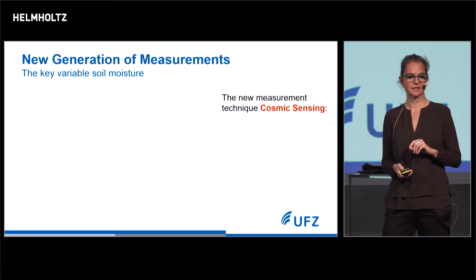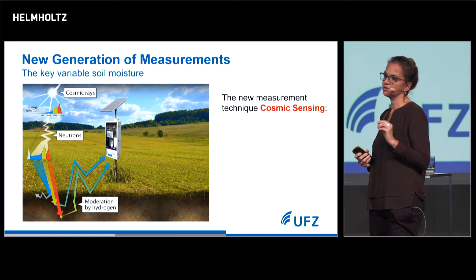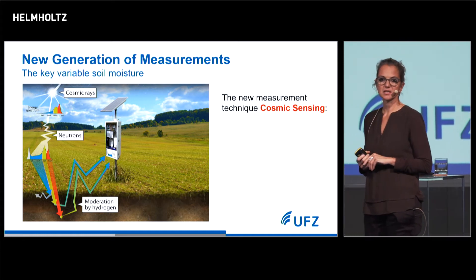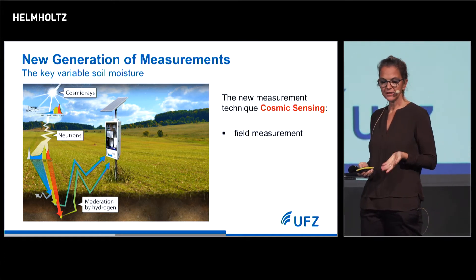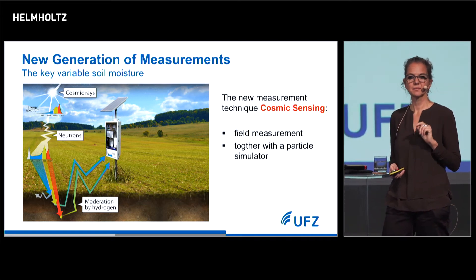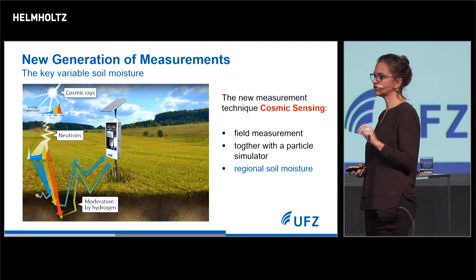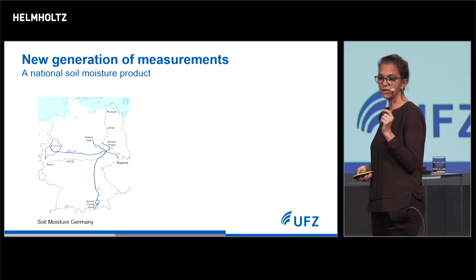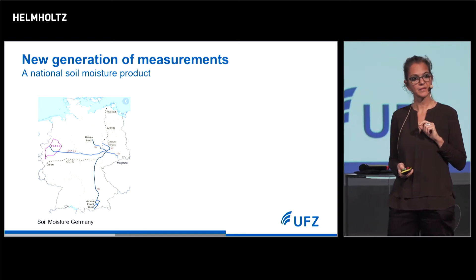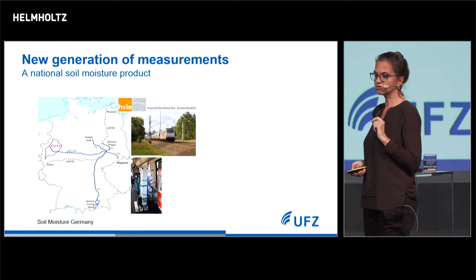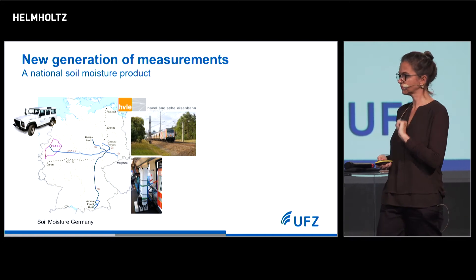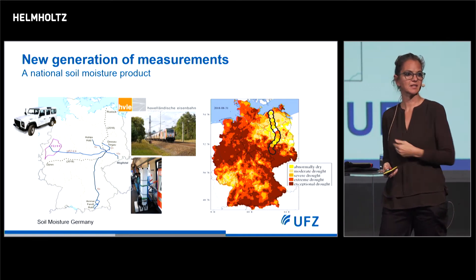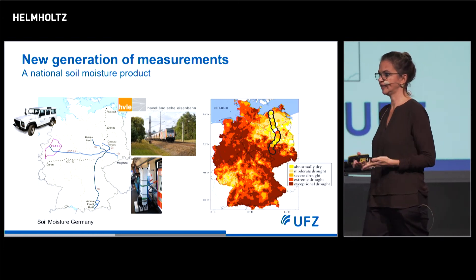But there is a method called cosmic sensing. It makes use of cosmic neutrons that interact with water in the soil, and these particles are detected by detectors. It's a field measurement that runs together with a simulator, and it gives you information on regional soil moisture over some hundred meters. We aim to have a national soil moisture product by placing these sensors on trains and cars, running them through Germany, combining the data with our model, and producing a validated drought monitor for Germany.